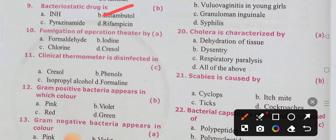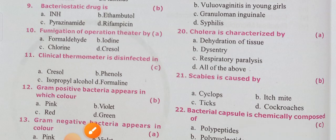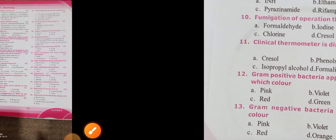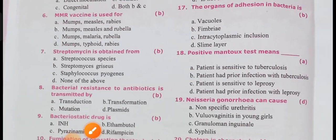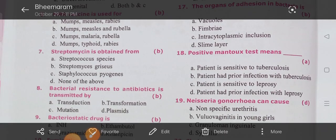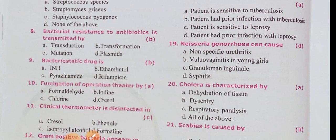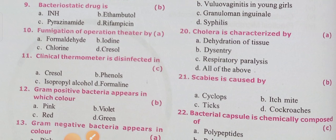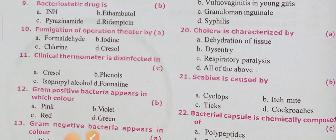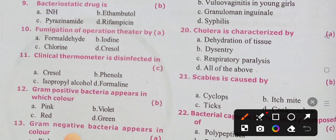Fumigation of the operation theater is done by formaldehyde. Option A: formaldehyde — this is an important question. The fumigation of the operation theater is done using formaldehyde.